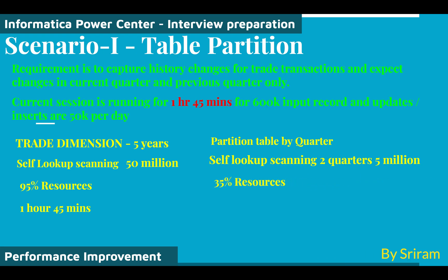Since we only need the previous and current quarters scanned instead of the full five years of data, I partitioned the target table by quarter — every year has four quarters. The self-lookup then only needs to scan two quarters, which is less than five million records, whereas earlier it was caching all 50 million. The resources needed to cache five million records dropped to about 35%, and the session now completes in 30 minutes — a significant improvement.